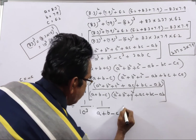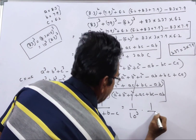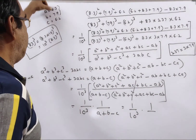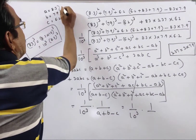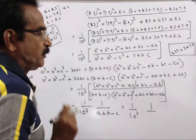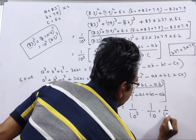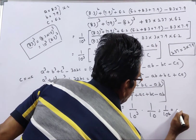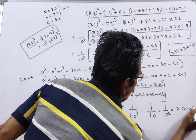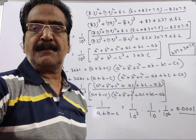A plus B minus C: that is 8.3 plus 7.9 equals 16.2, and 16.2 minus 6.2 equals 10. So this is equal to 1 by 10 to the power 4, which is equal to 0.0001. This is your answer, friends. Thank you. Have a nice day.